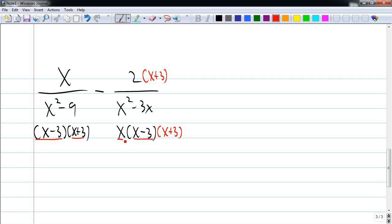There's an x over here. No x's in the first fraction, so I multiply the numerator and the denominator with x. So, this is going to give me, as my denominator, x times x minus 3 times x plus 3 in both denominators.